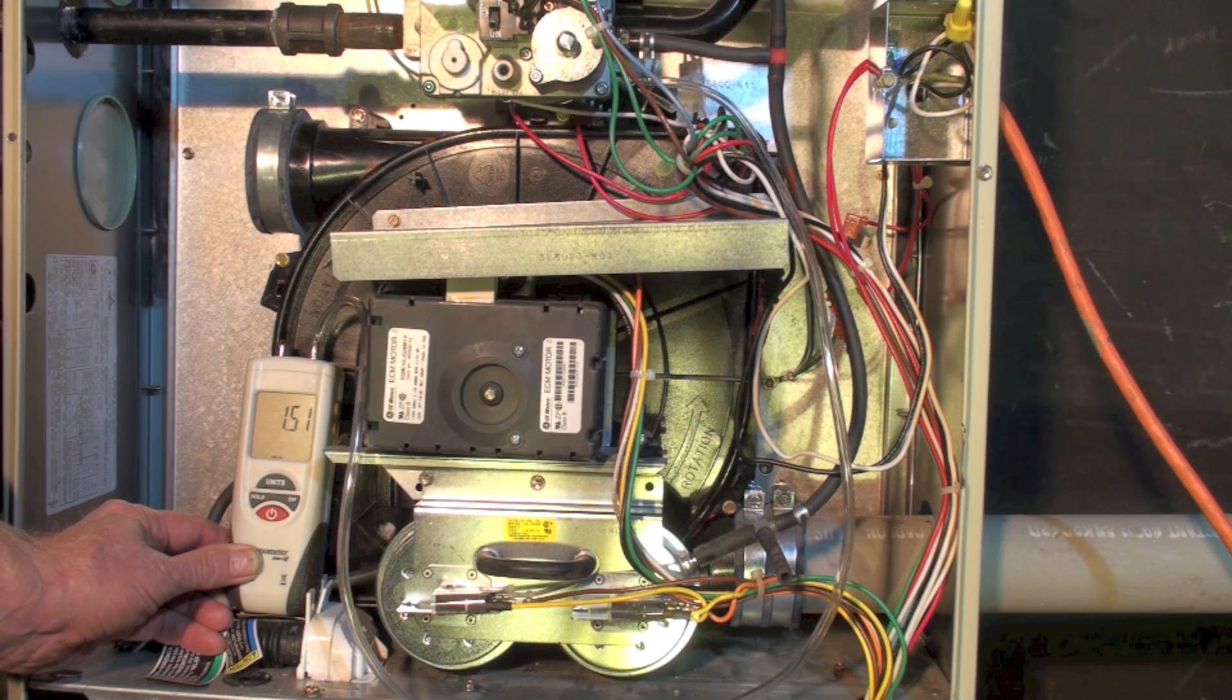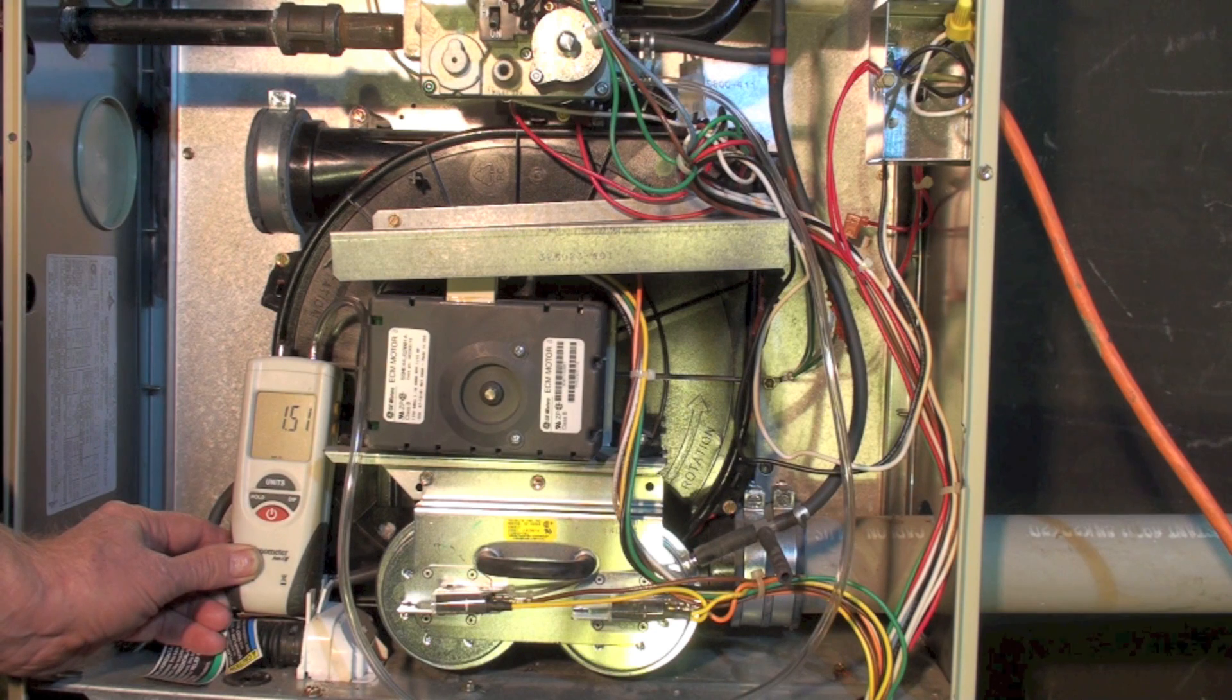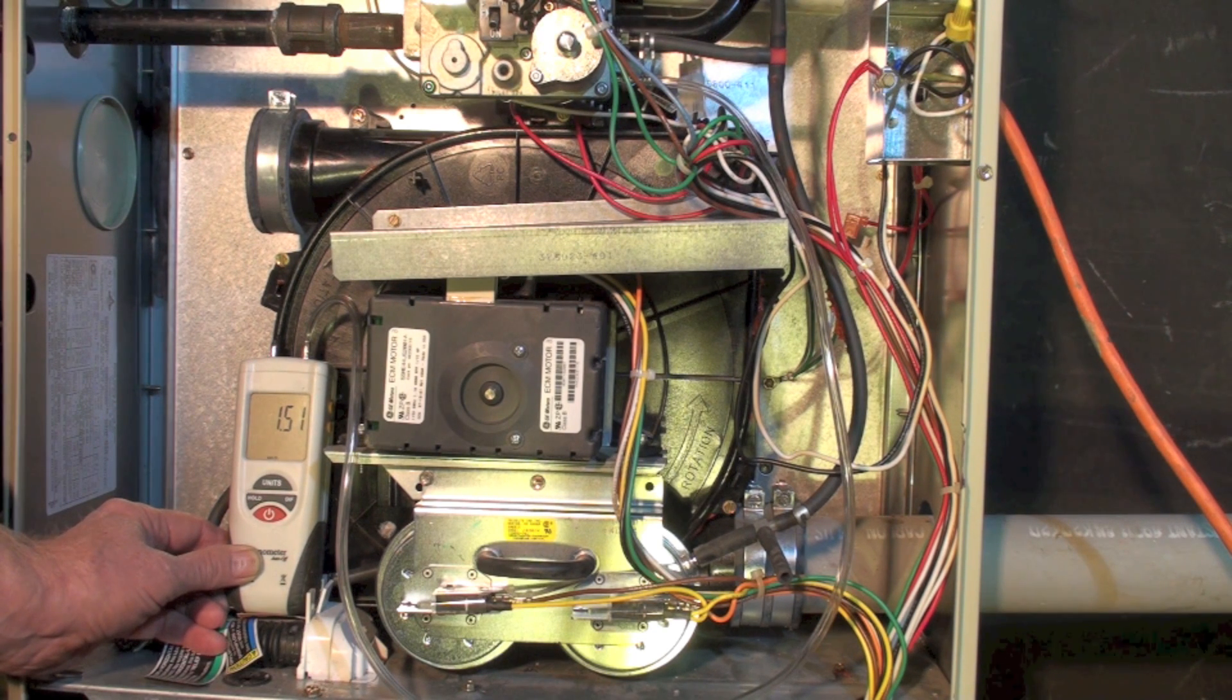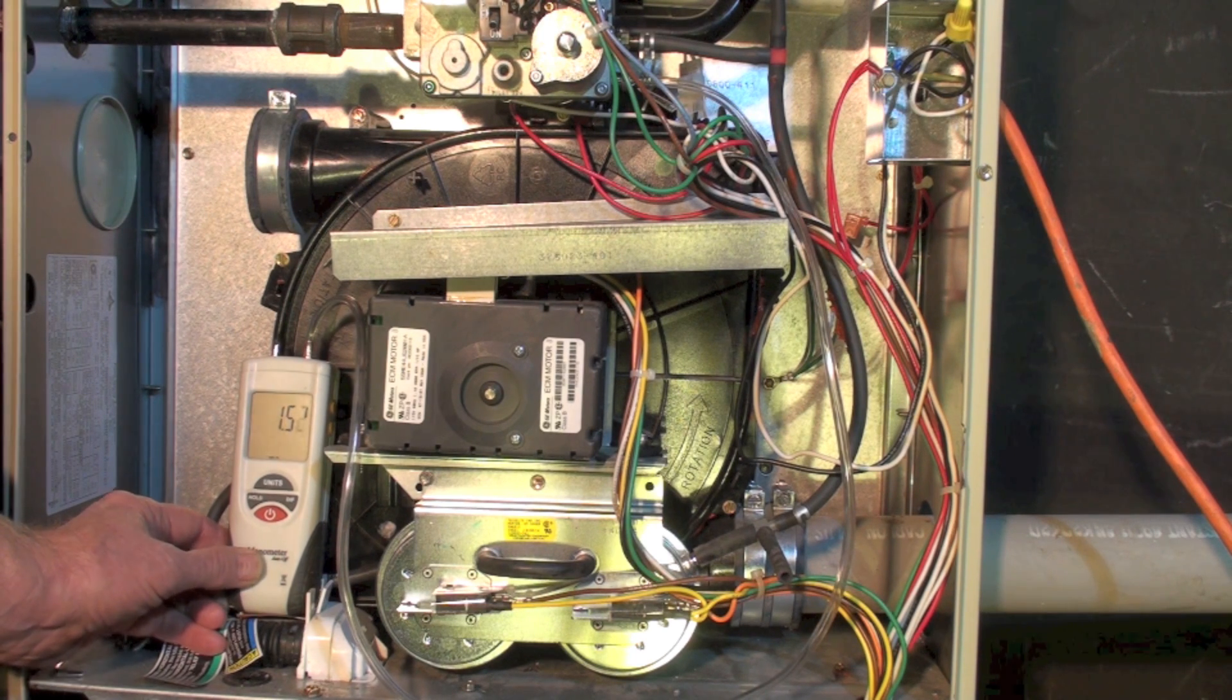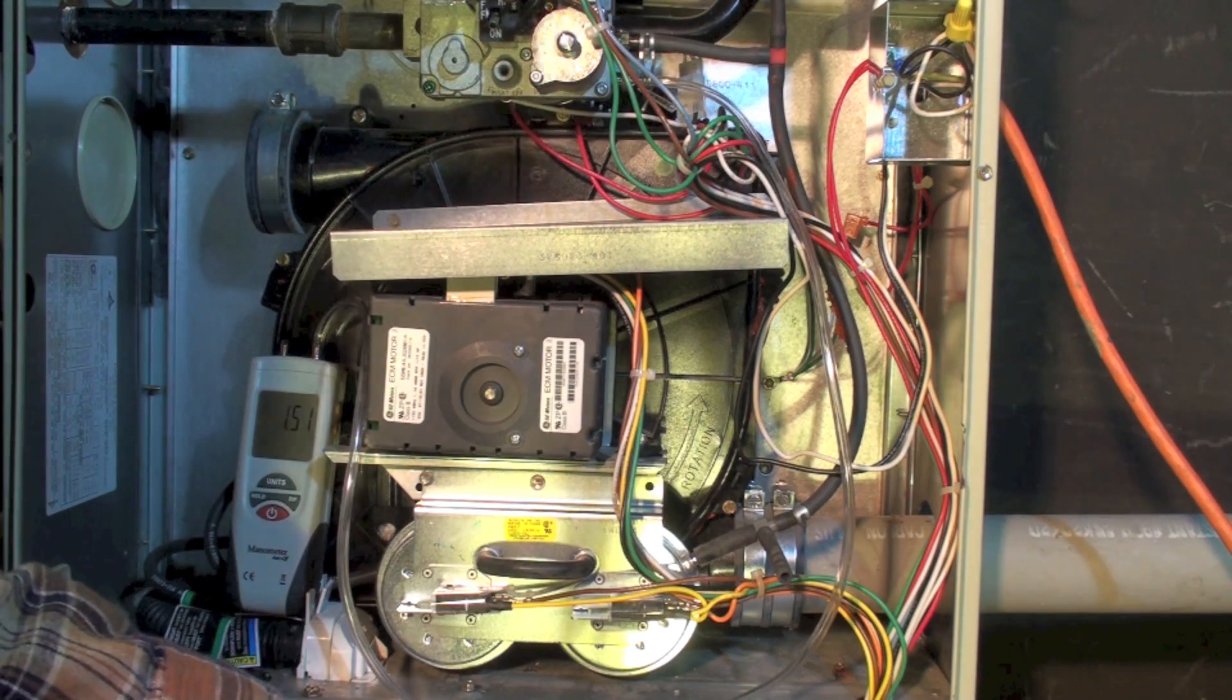Now I'm going to wait for the indoor fan to come on, and then I'm going to jumper from W1 to W2. That's going to give me second stage, and in a little bit I'll tell you why I didn't originally jumper this when I first started the furnace.